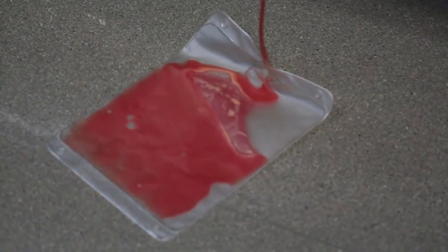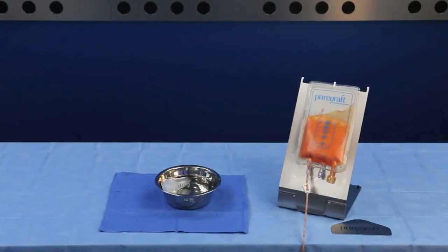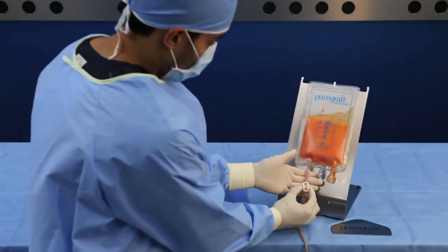As draining slows, note the amount of fat in the PureGraft bag. This is the pre-wash tissue volume. Use this number to gauge how much lactated Ringer's is needed for washing. After excess tissue has been drained, close the clamp to the drain bag.